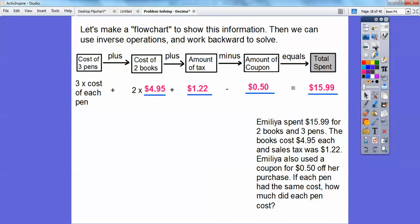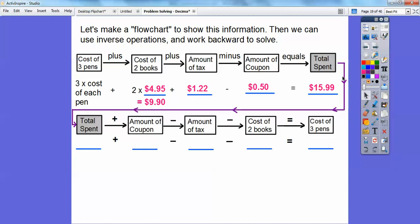The amount of tax is going to be that $1.22. The coupon is $0.50, and she spent $15.99. So let's put all that information in there. Okay, so it's going to get kind of messy here. We're just going to work backwards. So we're going to start here and go backwards. So the total amount spent, instead of minus, we'll add the coupon. Instead of plus, we'll minus the tax. And instead of plus, we'll minus the two books, and that'll give us the total cost of the three pens right there.